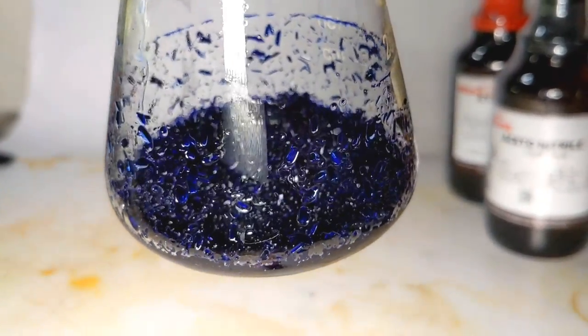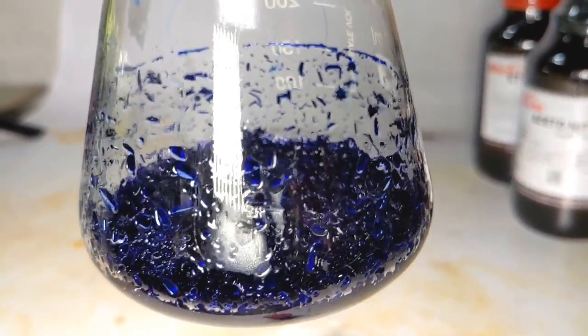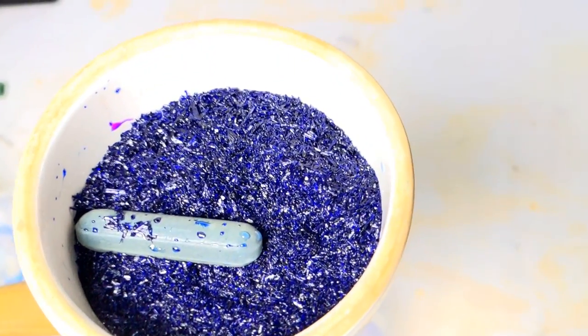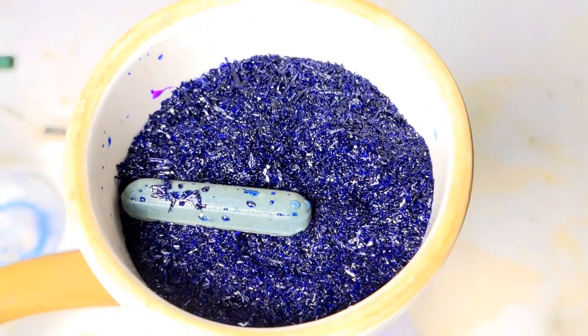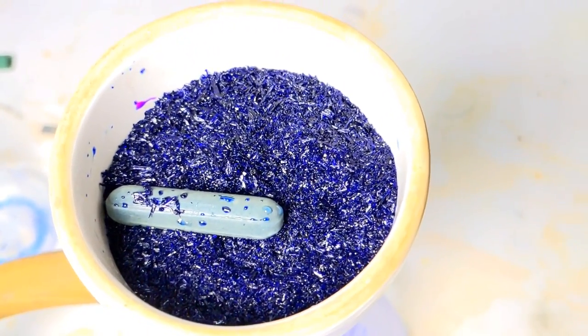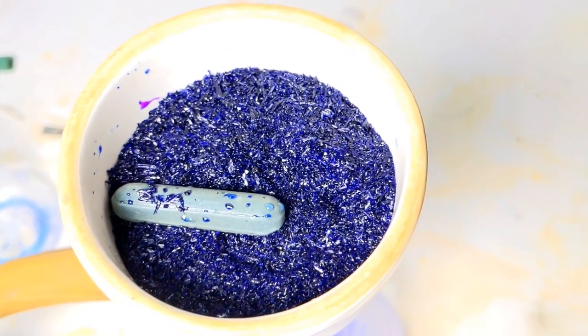It was then gently scraped out of the flask using a glass rod. You can use a little amount of decanted solution to wash down the crystals from the flask. It was then vacuum filtered and washed with diethyl ether for quick drying.